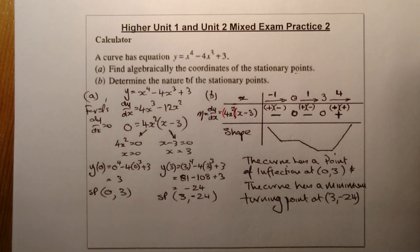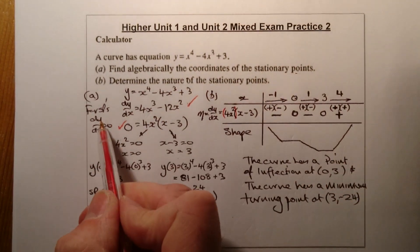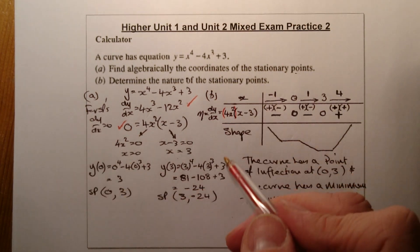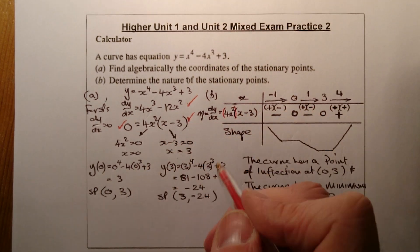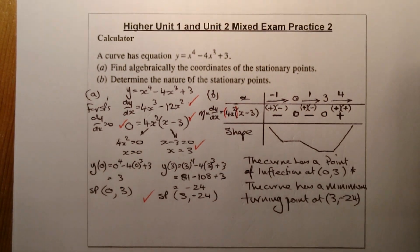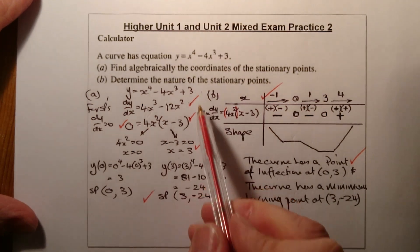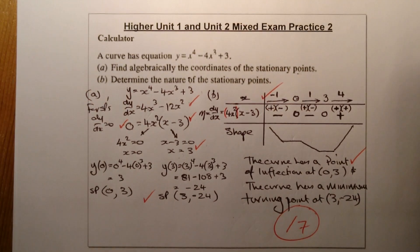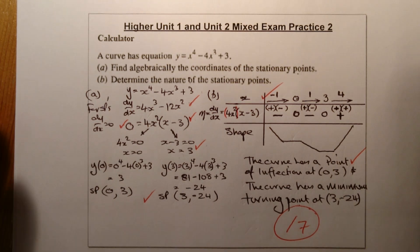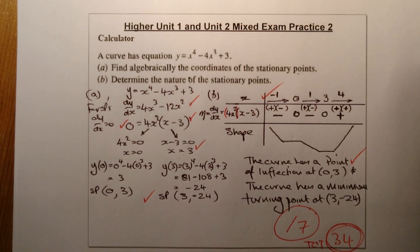There are different spellings for point of inflection but either is fine. Marks: one for differentiating, one for setting equal to 0, one for factorising, one for x-values, one for coordinates, one for the nature table, one for the correct statements - seven marks. Total for this whole piece of work: 34 marks. If you can do that in under an hour that's pretty good practice for prelims and final exams. Good luck with your prelims!